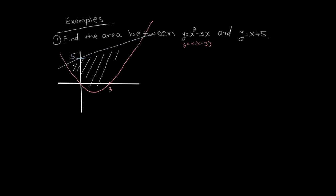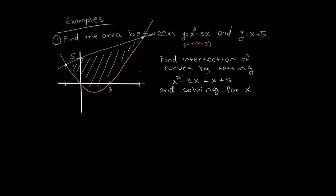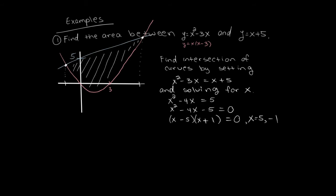The x values aren't given because they're delineated by the intersections of the curves. We find them by solving where the two functions intersect. Moving everything to one side and setting equal to zero, we subtract x and subtract 5 from both sides. The polynomial factors as (x minus 5)(x plus 1), giving x equals 5 and x equals negative 1. That matches the picture: x equals negative 1 is on the left and x equals 5 is on the right.